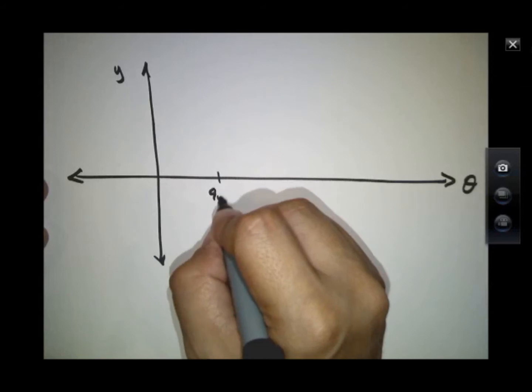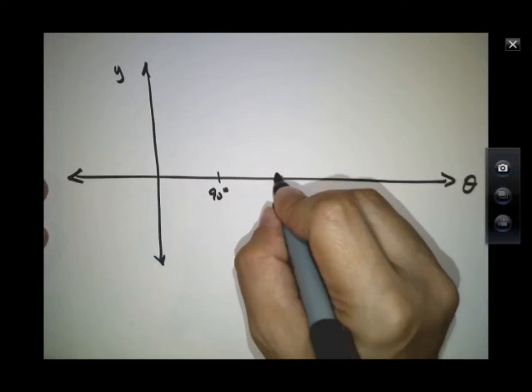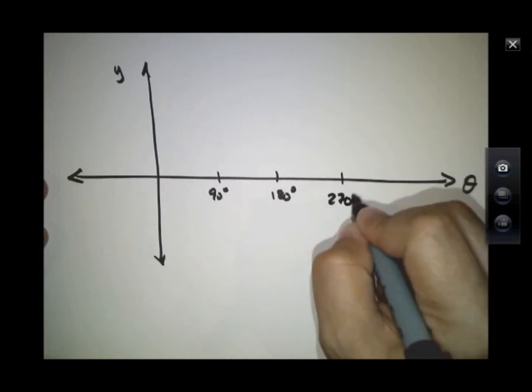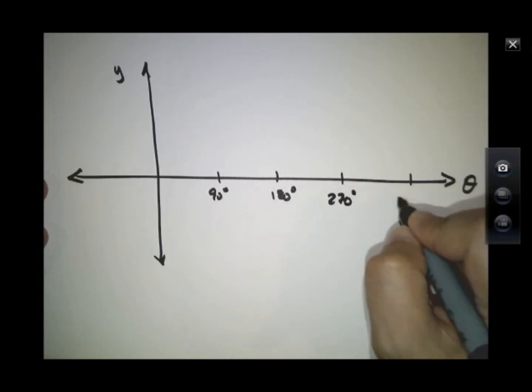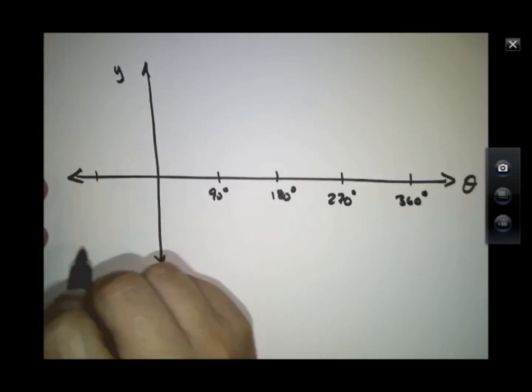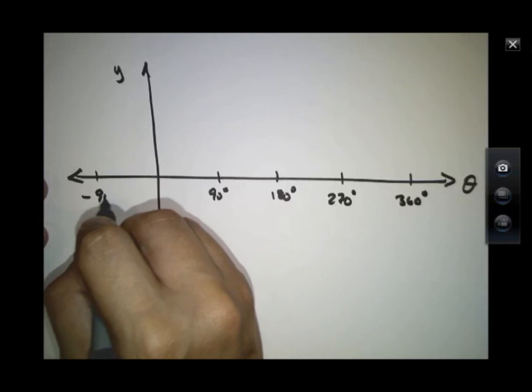This might be 90 degrees, 180 degrees, 270 degrees, 360, this will be minus 90 degrees.